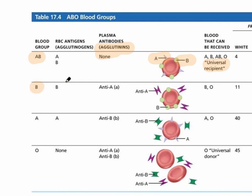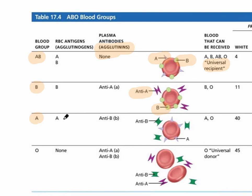With Type B blood, there's the B antigen on the red blood cell, but no A antigen — so A is seen as foreign. The anti-A antibody would attack any A antigen, meaning if Type A red blood cells were donated to this person, clumping would occur immediately. Type A blood is just the opposite: it has the A antigen and antibodies against B, which would attack Type B blood.